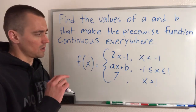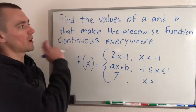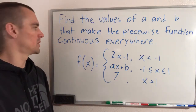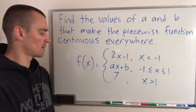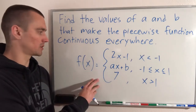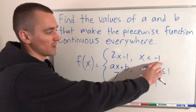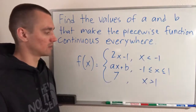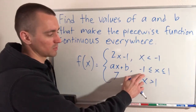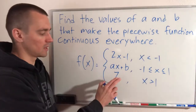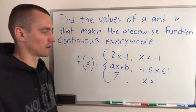The problem we're going to be doing today is: find the values of a and b that make the piecewise function continuous everywhere. We have three pieces: 2x minus 1 for all x less than negative 1, ax plus b for all x between negative 1 and 1, and 7 for x greater than 1.